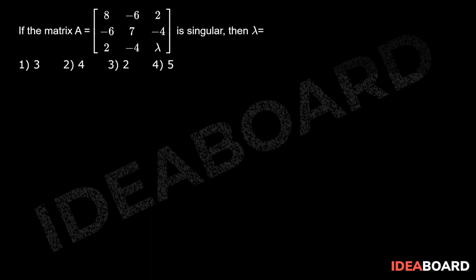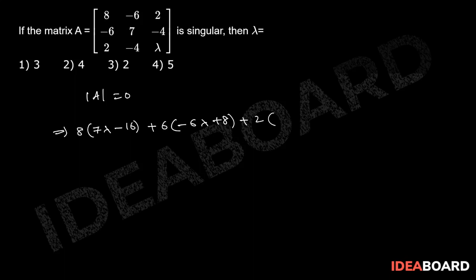Given the matrix is a singular matrix, then det(A) is equal to 0. That implies 8 into 7 lambda minus 16, plus 6 into minus 6 lambda plus 8, plus 2 into 24 minus 14. That implies 20 lambda minus 60 is equal to 0. That implies lambda is equal to 3.